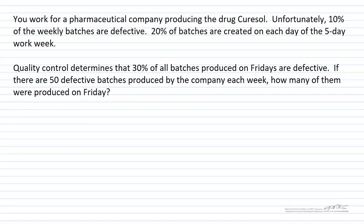Let's go through an example. You work for a pharmaceutical company that produces a drug called Curzol. Unfortunately, 10% of the weekly batches are defective. It's also known that 20% of batches are created on each day of the five-day work week. Quality control determines that 30% of all batches produced on Fridays are defective. If there are 50 defective batches produced each week, how many of them were produced on Friday?